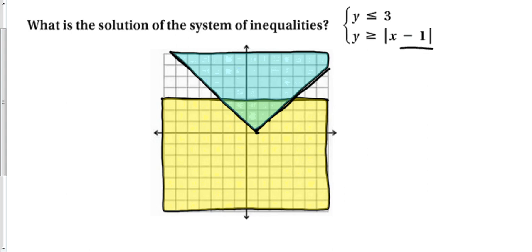There is no limit to the number of equations you could try to find where they all overlap. The only thing is that the overlapping region gets smaller and smaller. And if one line doesn't overlap anymore, the system would have no solution — only some of the individual inequalities would have solutions.